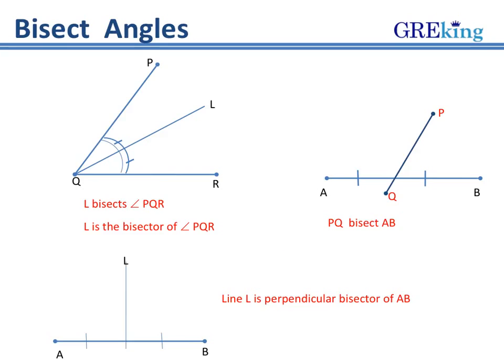The bisector of an angle. A line which divides the angle into two equal halves is called a bisector angle. So here you can see that L has bisected the angle PQR into two equal halves. Similar to an angle, a bisector can also be made for a line segment. So in the second image you see PQ bisects the line segment AB into two equal halves. In the image shown below you can see that line L is drawn perpendicular to line AB and it also bisects the line AB. Hence it is referred to as the perpendicular bisector of AB wherein the angle at the base will always be 90 degrees.